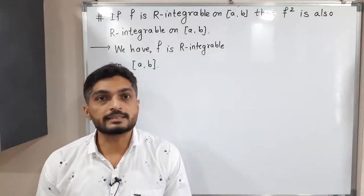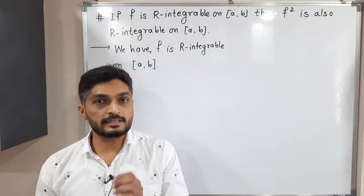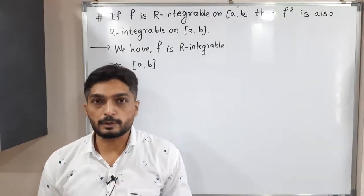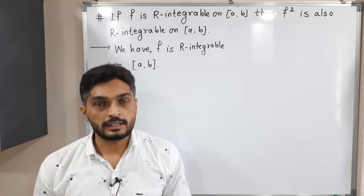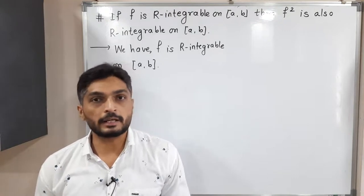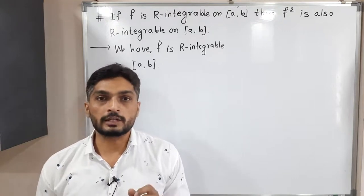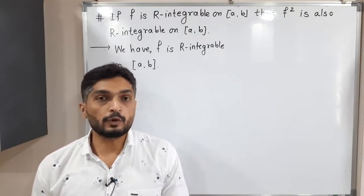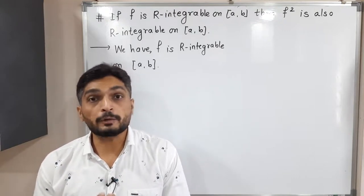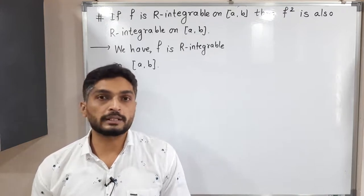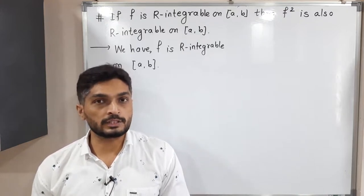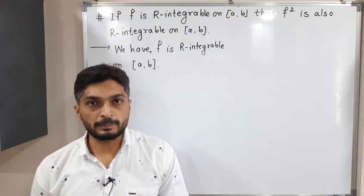Let us discuss this result. The given information is: function f is Riemann integrable on closed interval [a,b]. What we have to prove is that f² is also Riemann integrable on closed interval [a,b].